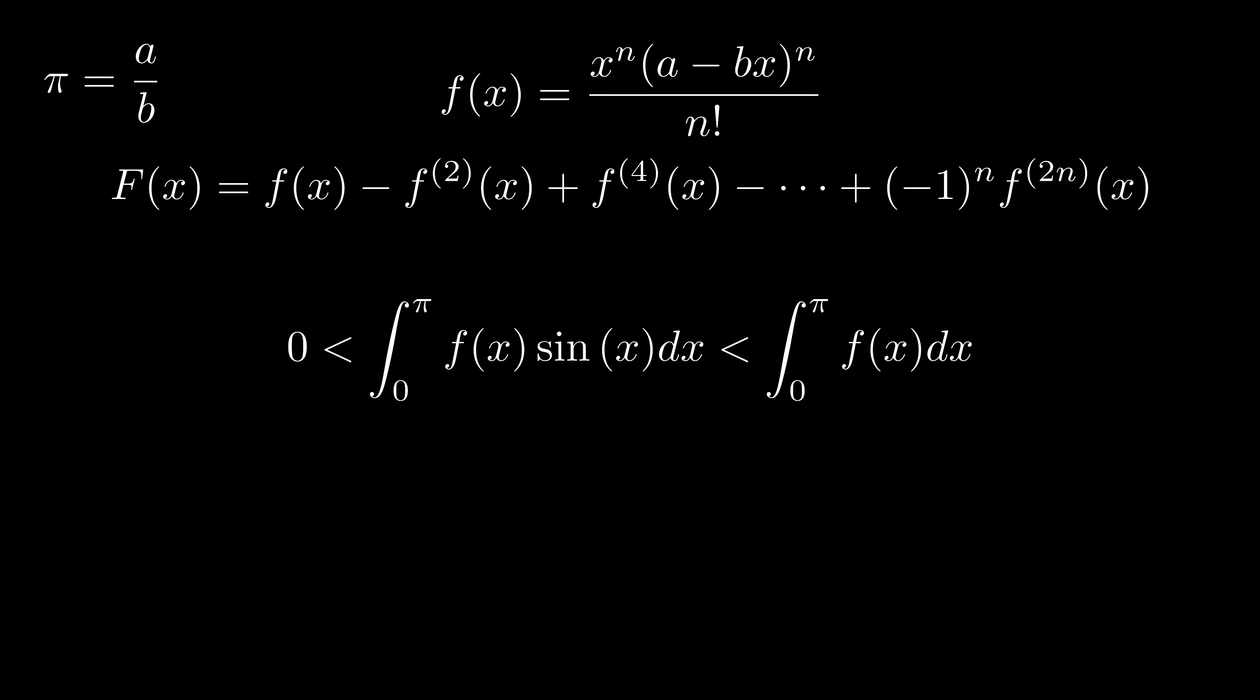But sin x from zero to pi is always less than 1. So applying the squeeze theorem, it's less than integration of f(x) itself. And we can loosen the bound a little bit more. First, we can replace x with pi, so from x to the power of n to pi to the power of n. Then we can replace a minus bx with a because a is always greater than a minus bx from zero to pi. Remember, pi is a over b. The right hand side becomes a constant. It is pi to the power of n plus 1, a to the power of n over n factorial.